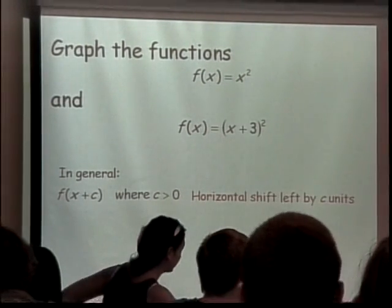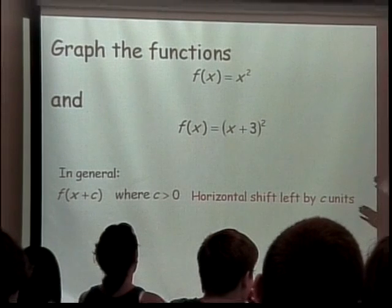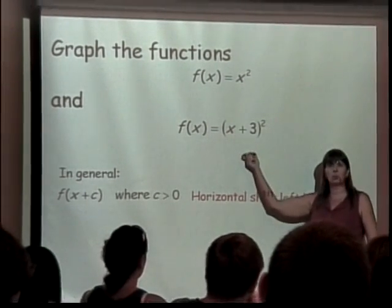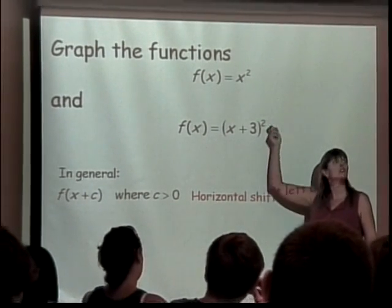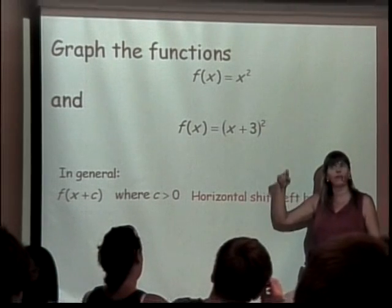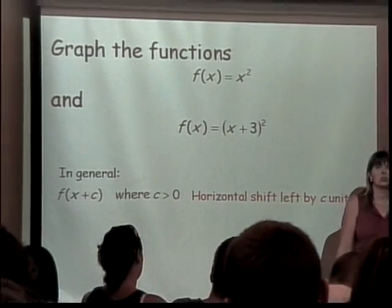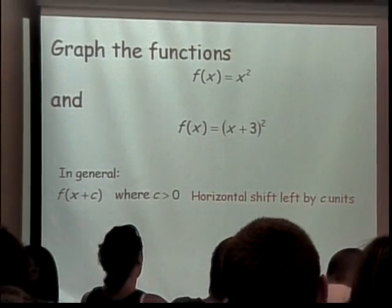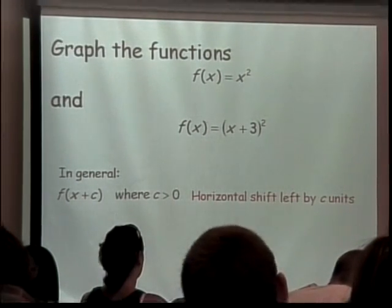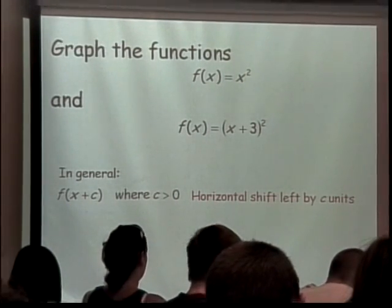So how would that look? If we have our original function is x squared, and inside what is being squared, we do x plus 3 squared, that's inside the function. What does that do to your graph? Go ahead and look and tell me. I know what it says up there. Look on the graph. It moves it left.